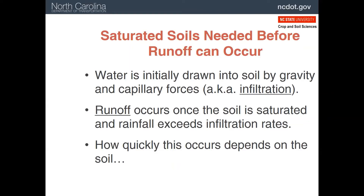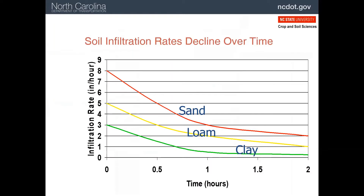In order for runoff to get started, the soil first has to become saturated so that it cannot soak up the rain that is falling. How fast this occurs can depend on the soil you're dealing with. Here we have a chart showing how fast rain can soak into or infiltrate soils with different textures. Sandy soils can soak up a lot of rain, while clay soils cannot. Long duration storms can generate a lot of runoff.